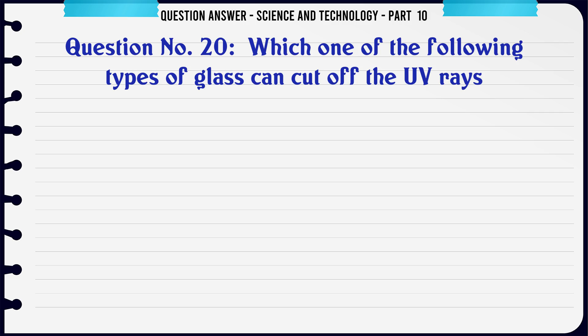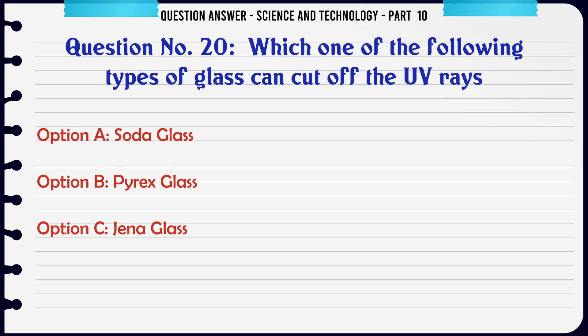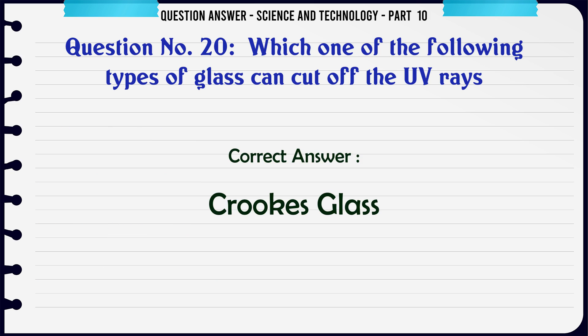Which one of the following types of glass can cut off the UV rays? A. Soda glass. B. Pyrex glass. C. Jena glass. D. Crookes glass. The correct answer is Crookes glass.